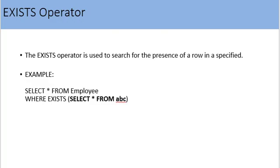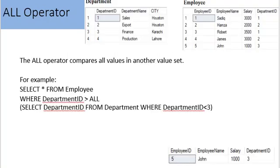SELECT * FROM employee WHERE EXISTS (SELECT * FROM ABC). This query will only return employee records when one or more records are returned by the subquery. The ALL operator is used to compare a value to all values returned by a subquery.